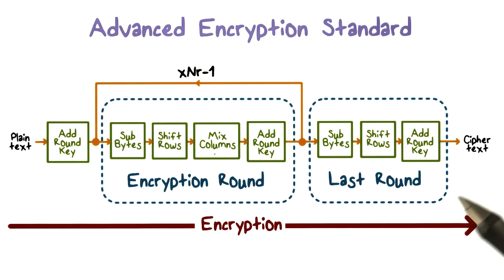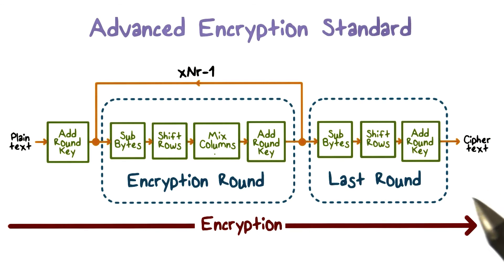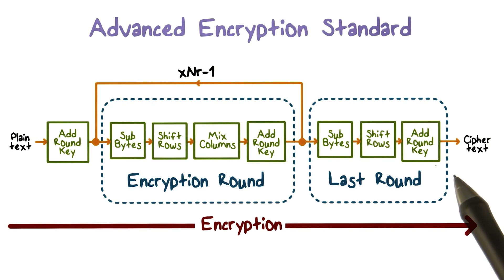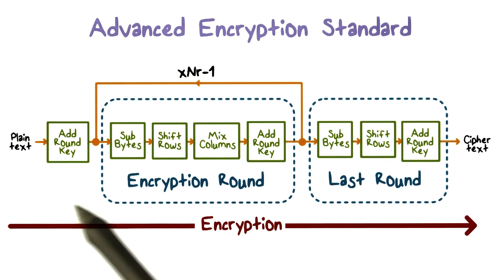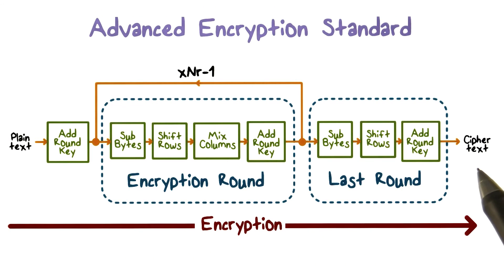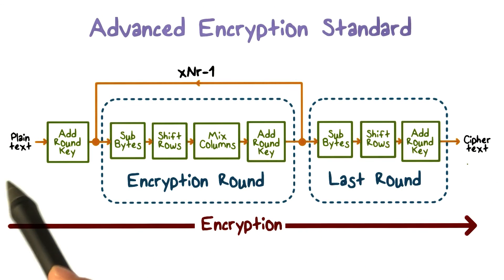Therefore, each of the operations are reversible. As a result, when we run the algorithm in the reverse order, we can decrypt the ciphertext back into the plaintext.